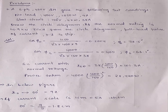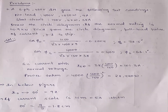By giving this data, they ask you to draw the circle diagram. And if the normal rating of the induction motor is 14.9 kilowatts, find from the circle diagram: full load value of current, power factor, and slip. So after drawing the circle diagram, you have to find out the full load value of current, power factor, and slip.